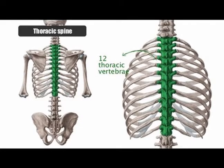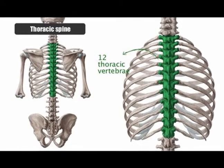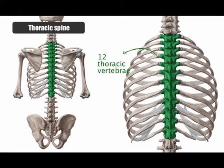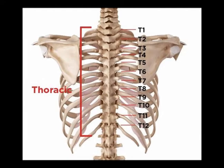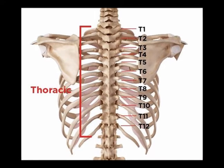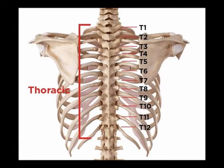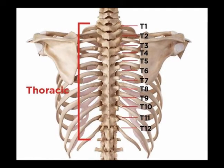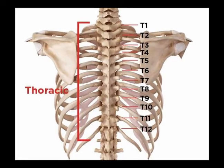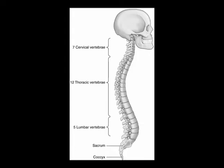The thoracic spine is the medical name for the mid-back. The thoracic spine has 12 articulating vertebrae, and each of those vertebrae articulates with the ribs. The thoracic spine is functionally rigid, meaning that it doesn't move as well as the cervical spine and the lumbar spine. The reasons for that are the facet joints are coronally oriented, there are very thin intervertebral discs between each of the thoracic vertebrae, and also the thoracic vertebrae articulate with the ribs.